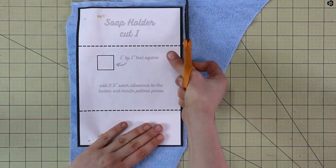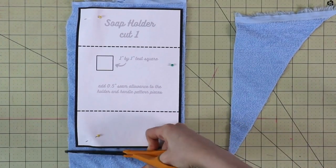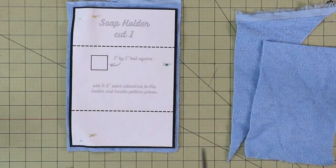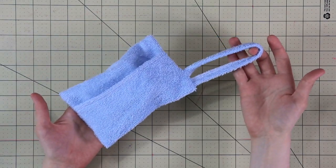Now first cut out the rectangle for the soap holder and the handle. Now you don't have to make the handle from the same fabric, it can also be made out of rope or ribbon.